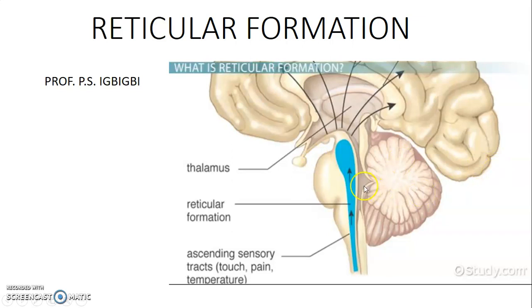This picture shows the location of the reticular formation. This is the brainstem: midbrain, the pons, and the medulla. We have the reticular formation located at the brainstem.